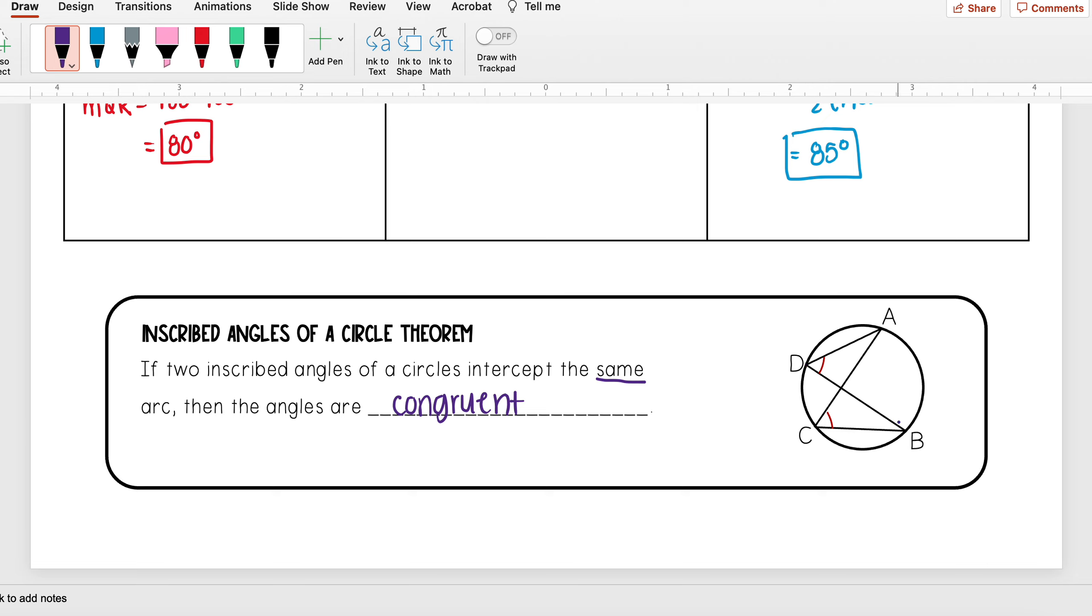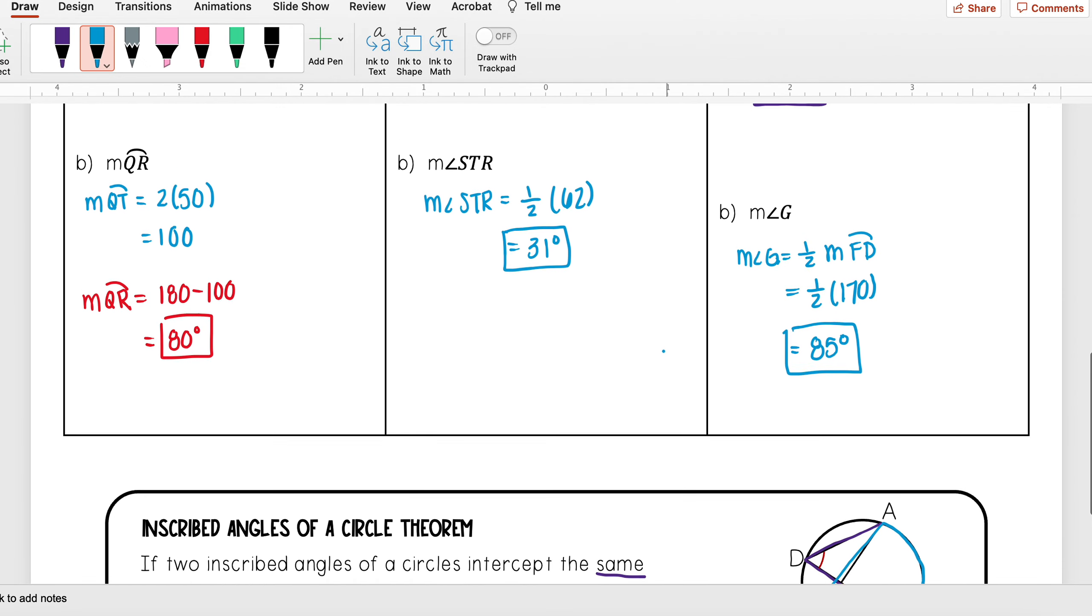Angle ADB and angle ACB both intercept the same arc AB. Since they both intercept the same arc AB, angle ADB is congruent to angle ACB, and we'll see that every single time.